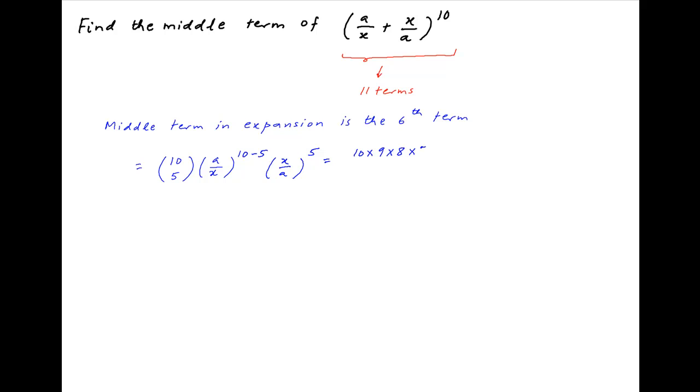This equals (10 times 9 times 8 times 7 times 6) divided by (1 times 2 times 3 times 4 times 5) multiplied by (a/x) raised to the power 5 multiplied by (x/a) raised to the power 5.